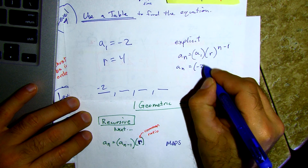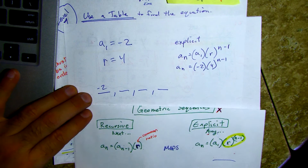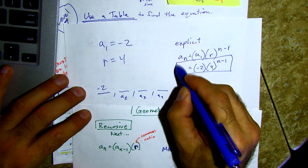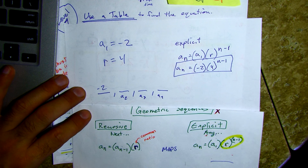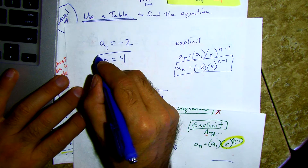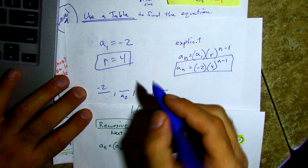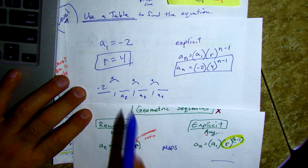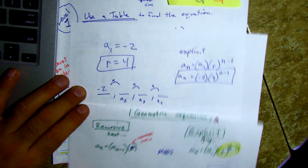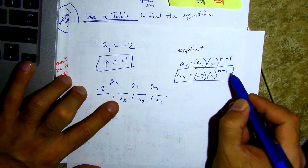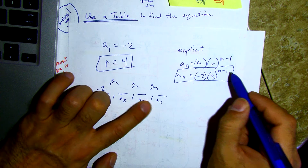We can find the next three terms just by using what we know about our common ratio, because all of this is going to be multiplied by something to get to the next one. You could plug in two, three, four for n and work it out, but we know our common ratio is four — so times four, times four, times four will get it to us.